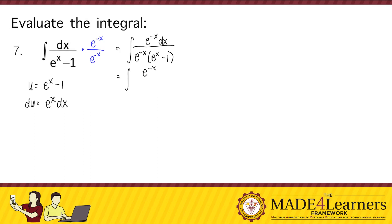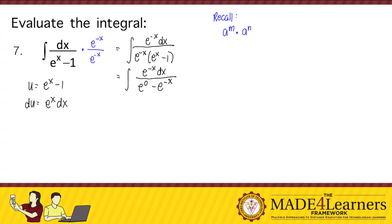So that's the integral of e to the power of negative x dx. Take note, the denominator will now become e to the power of 0 minus e to the power of negative x. Why is that 0? We're multiplying e to the power of negative x times e to the power of x — they have the same base and their exponents are negative x and x. Recall the laws of exponents: a to the power of m times a to the power of n equals a to the power of m plus n. So we add the exponents: negative x plus x equals 0.